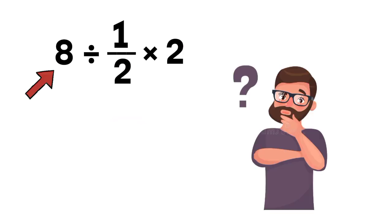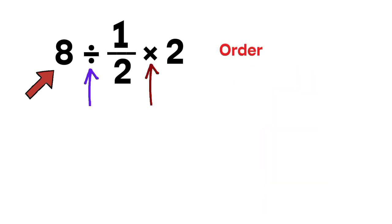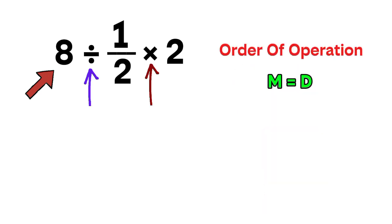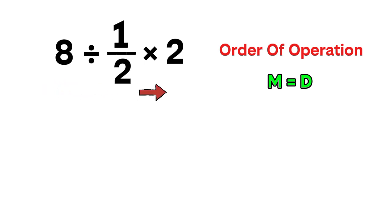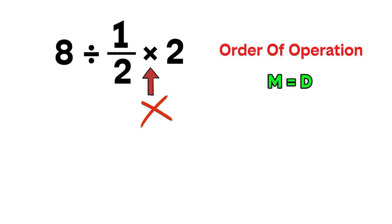In this expression, we have one division and one multiplication. And according to the order of operations, multiplication and division have the same priority. That means we always go from left to right. So we don't start with the multiplication — we begin with 8 divided by 1 over 2.